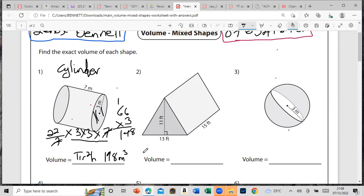Let's move on to number two. This is what we call a triangular prism. Again, remember it's area of the base times the height.